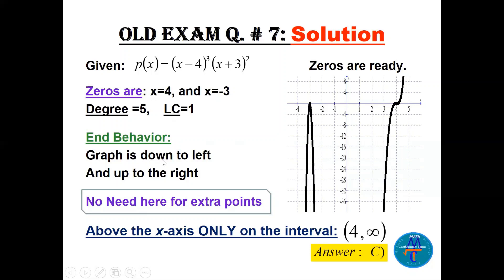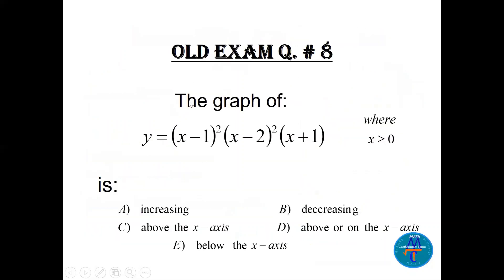No extra points are needed. The graph is above the x-axis from 4 to infinity (open interval). Sketching: the graph goes down, comes back tangent at minus 3, then comes back down because of the (x + 3) squared term. The same idea applies for question 8.